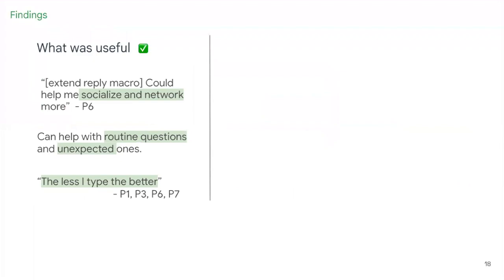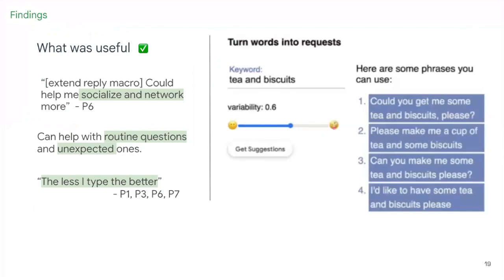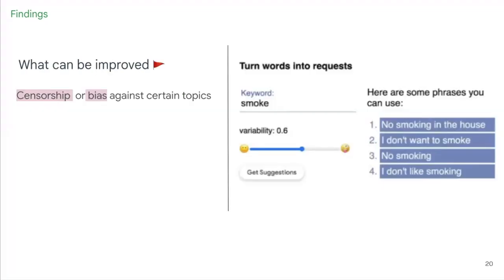Most participants found speech macros to be either very or extremely useful. Participants indicated that the Extend Reply macro could help them socialize more, and having the model know background information about them could help answer routine biographical questions like, 'Where did you go to college?' Being able to get help request phrases quickly with just one keyword was also rated as highly useful. Nonetheless, when receiving input like the word 'smoke,' in a case where the user wanted to request his caregiver take him out for a smoke, the model steered the user away from this specific activity.